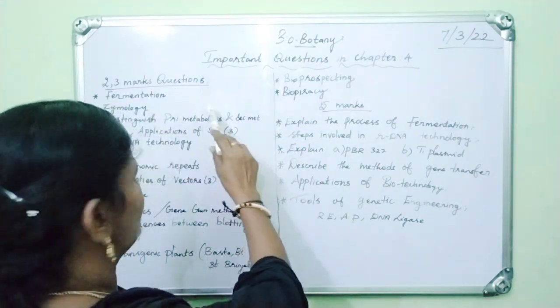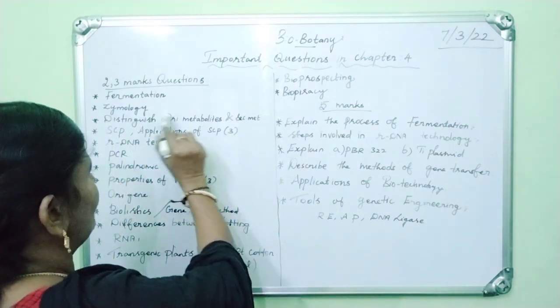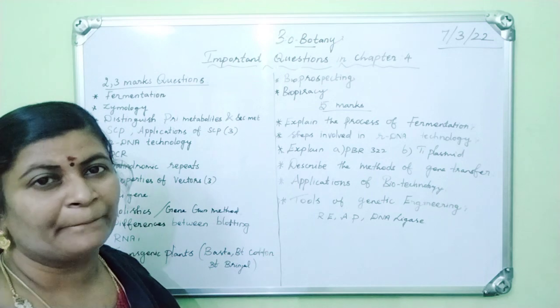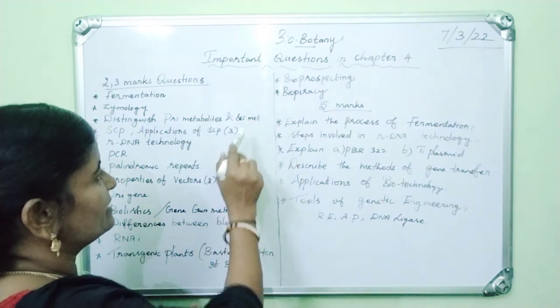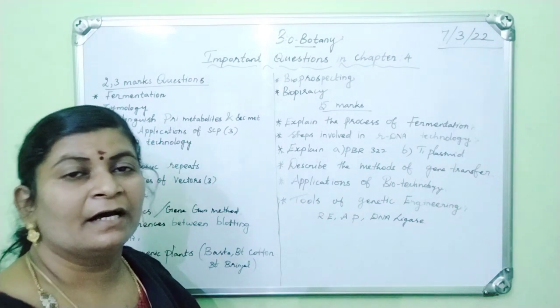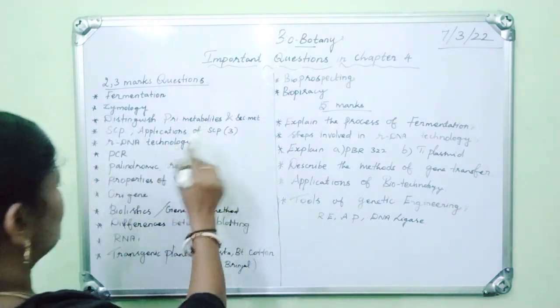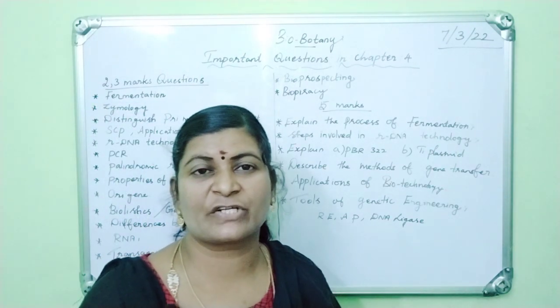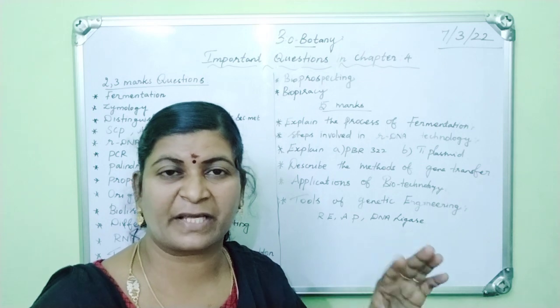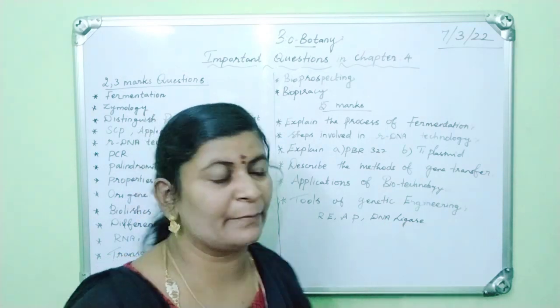First one, fermentation - define fermentation. Then scimology, what is scimology? Then distinguish between primary metabolites and secondary metabolites. That may be asked as a three mark question. Then SCP, define SCP. Then application of SCP. It is very easy. Application any three mark means you should write any three points.